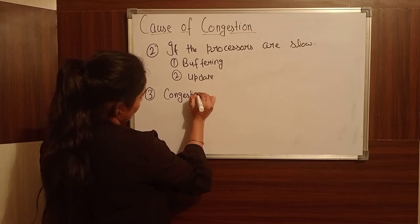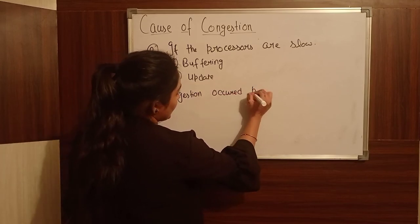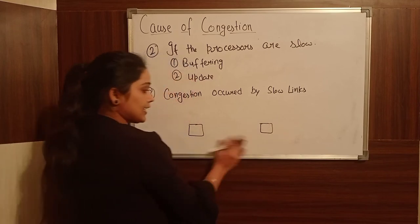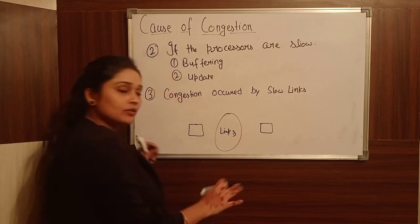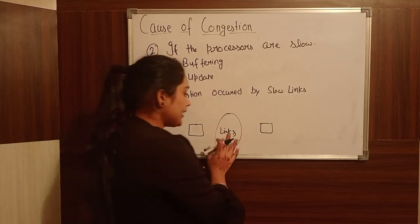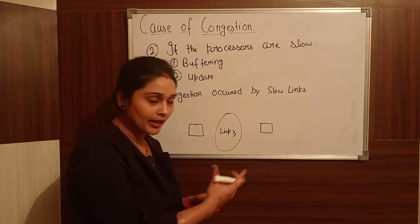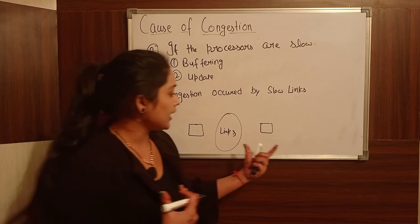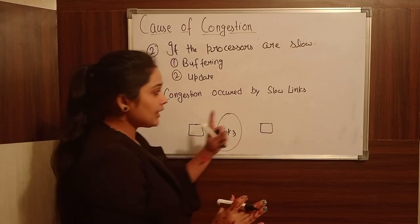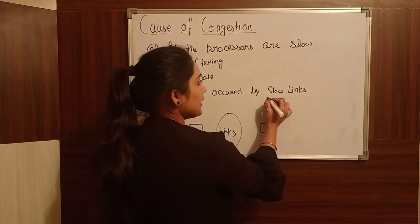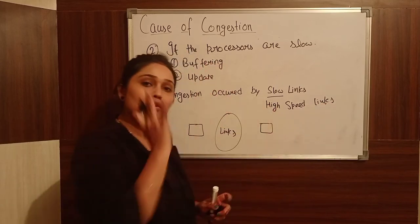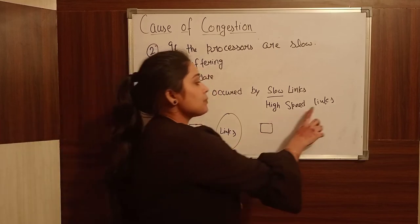The third reason is caused by slow links. That means when you have one device connected to another device and you send data over a link, but if that link is slow, the data will not be sent properly and congestion will occur. We can solve this problem by using high-speed links — when we use high-speed links, we can transfer data without congestion.